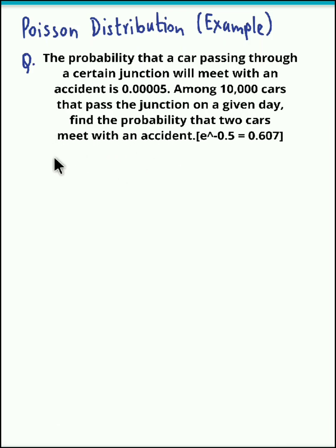Now in order to obtain the probability we first need to obtain the parameter denoted by lambda. For that we use the given probability P, which is the probability of success, 0.00005, and n, the number of cars, which is 10,000.